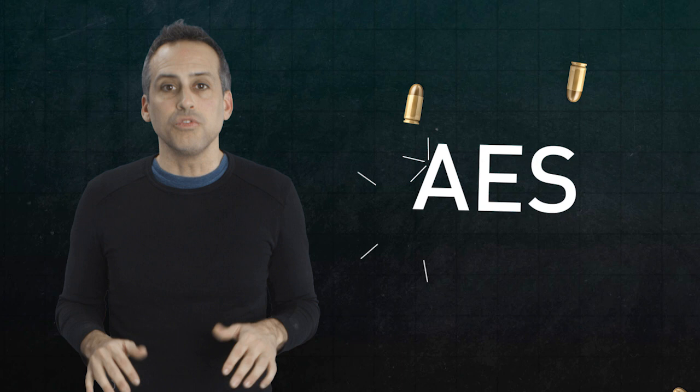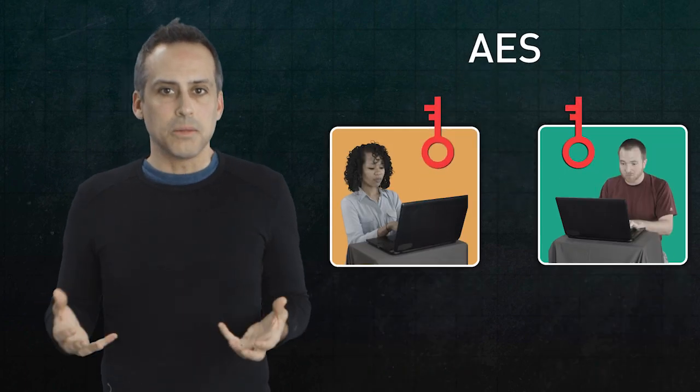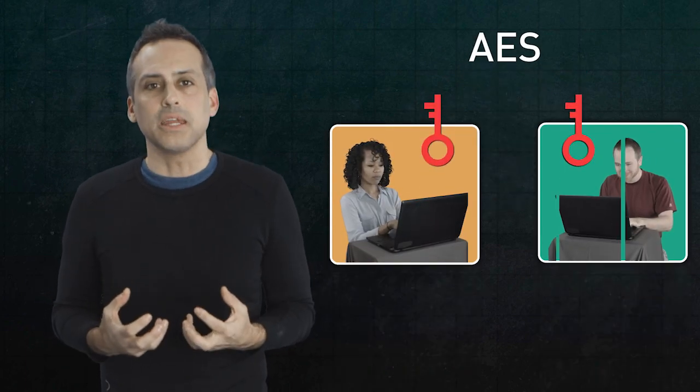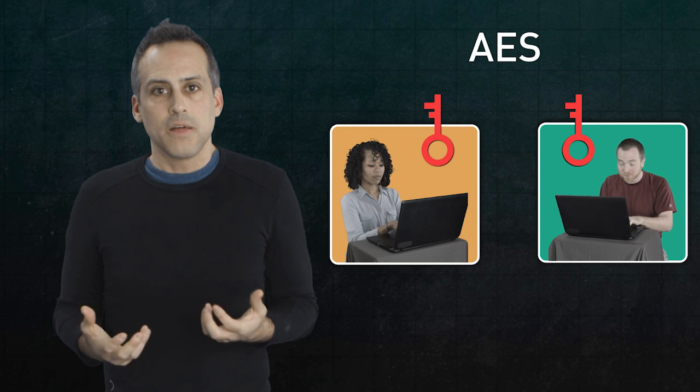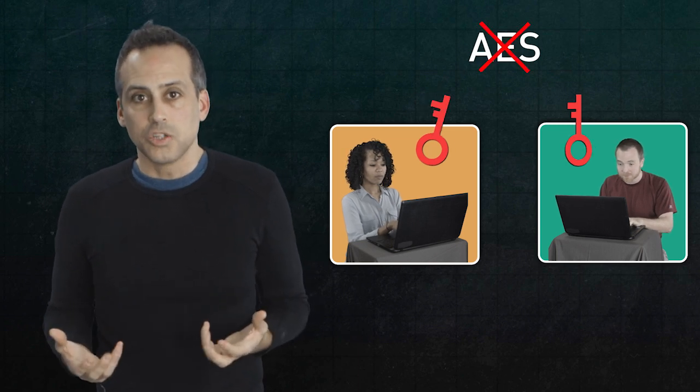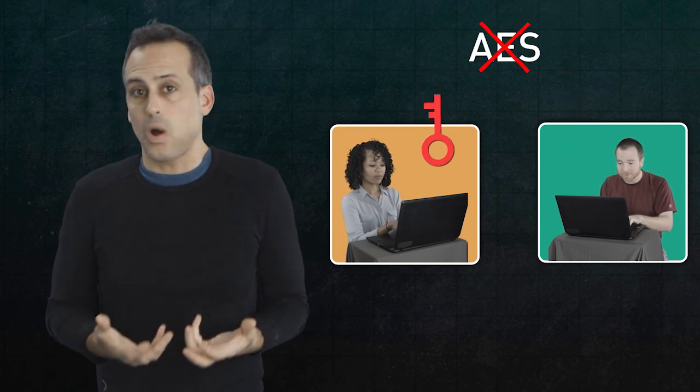In those episodes, we said that symmetric single key encryption schemes have become the workhorses of secure communication, and for a good reason. They're fast and practically bulletproof once two parties, like Alice and Bob, have a single shared key in hand. But that's the challenge. They can't use symmetric key encryption to share the original symmetric key. So how do they get started?